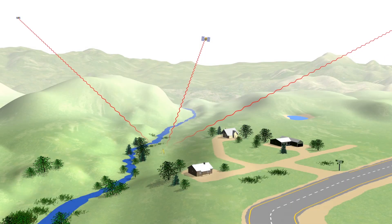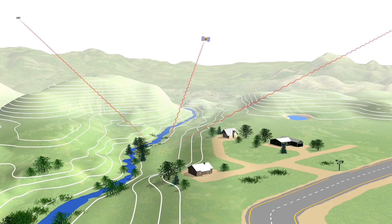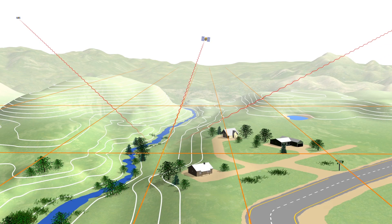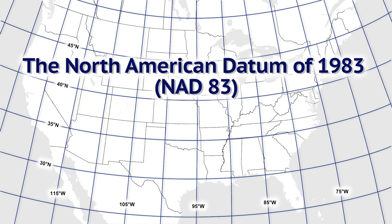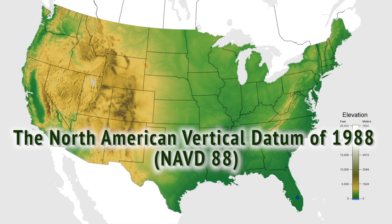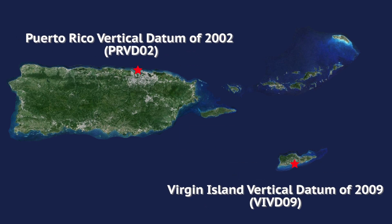While there are challenges mixing old and new positioning information, overall, new technologies like GPS help to improve the accuracy of our current datums. The North American Datum of 1983, NAD83, is the nation's horizontal or geometric datum, providing latitude and longitude and some height information. The North American Vertical Datum of 1988, NAVD88, is the nation's vertical datum, providing elevation information relative to a reference surface defined by mean sea level. U.S. territories have separate vertical datums.